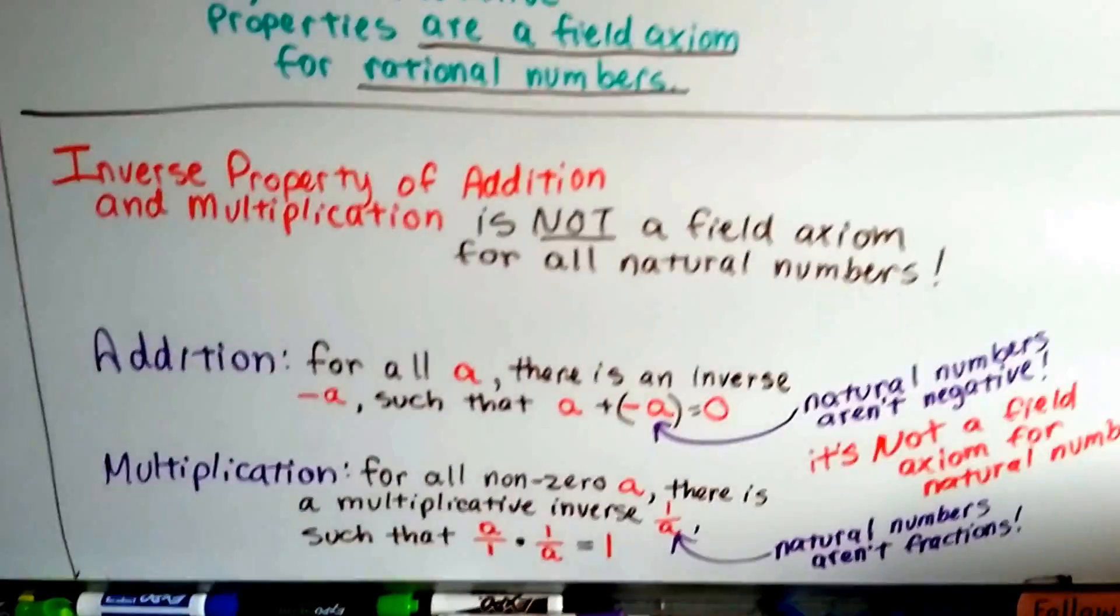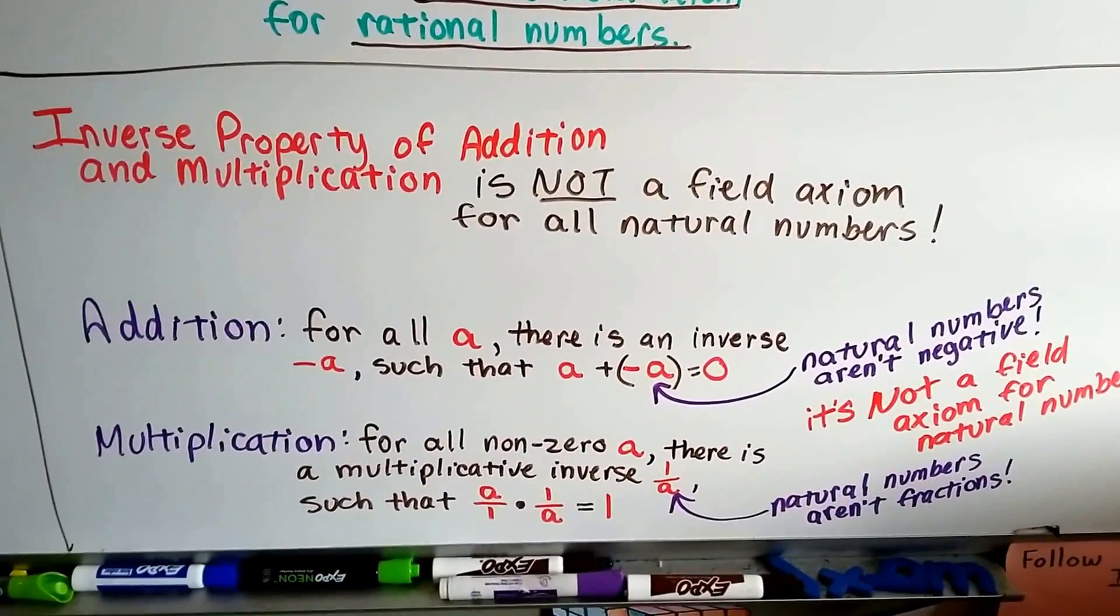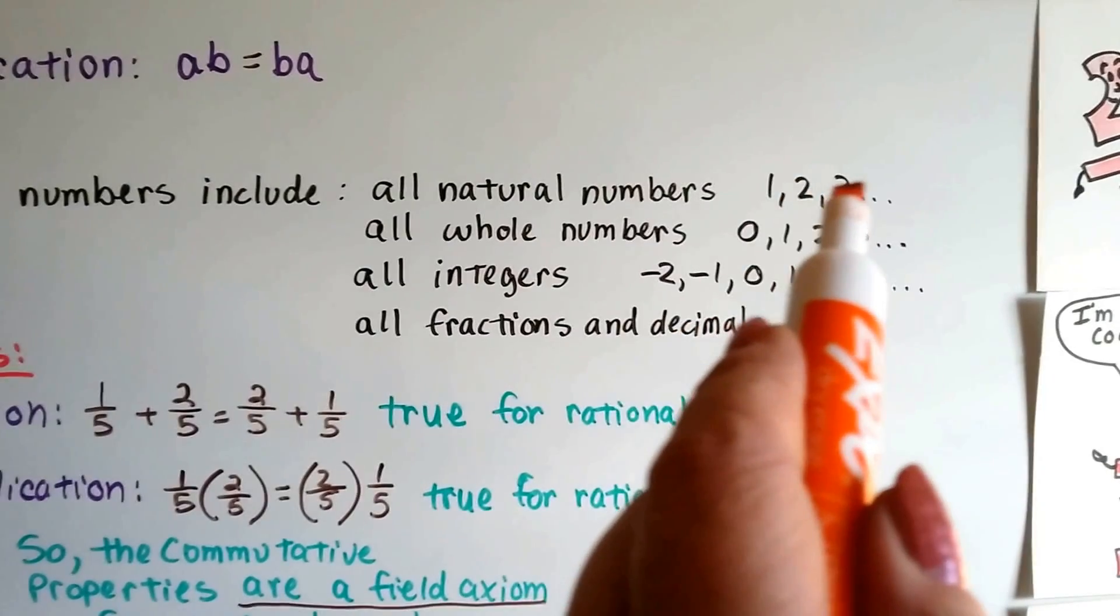Now let's look at the inverse property of addition and multiplication. It's not a field axiom for all natural numbers. Now remember, natural numbers is like the smallest group. It's only one, two, and three, etc., four, five, six, seven, eight.